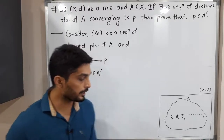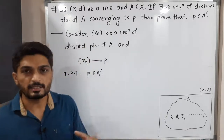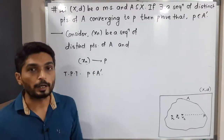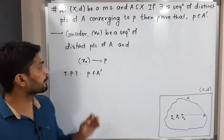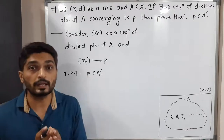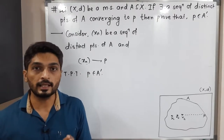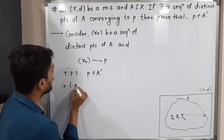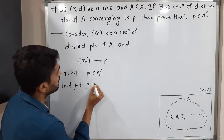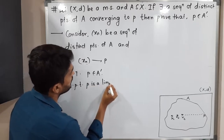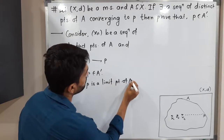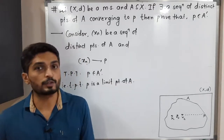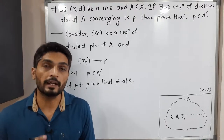I have written already the given information. What is the given information? Xn is a sequence of distinct points of A converging to point P. And what we have to prove? We have to prove that P belongs to A dash, that means simply we have to prove that P is a limit point of A.